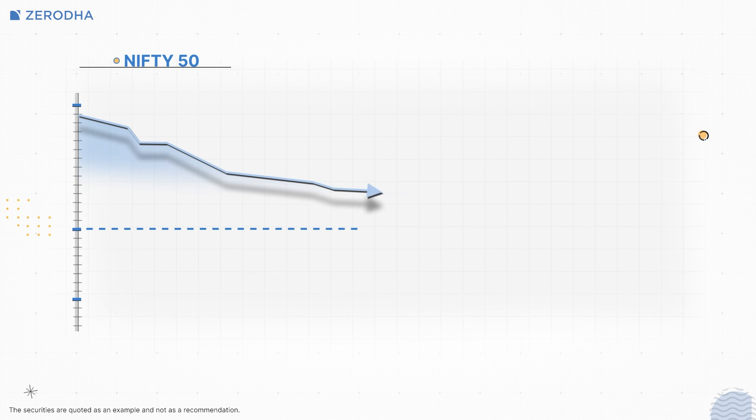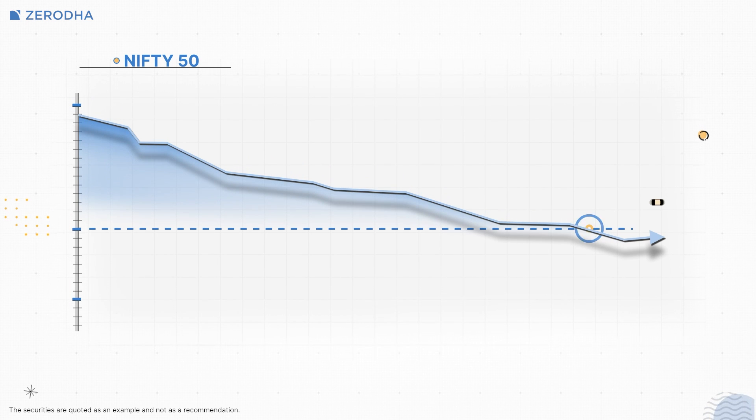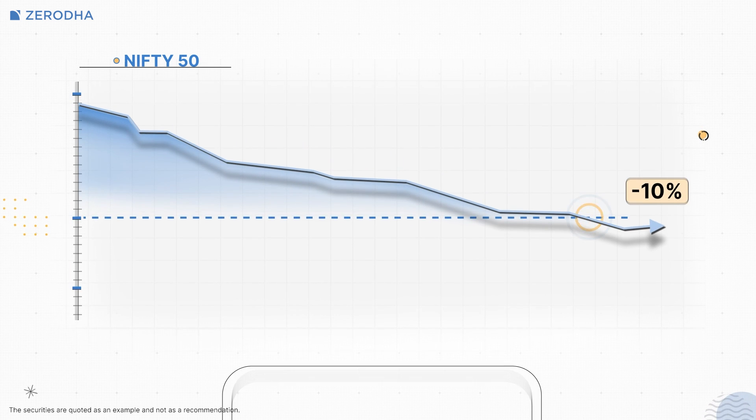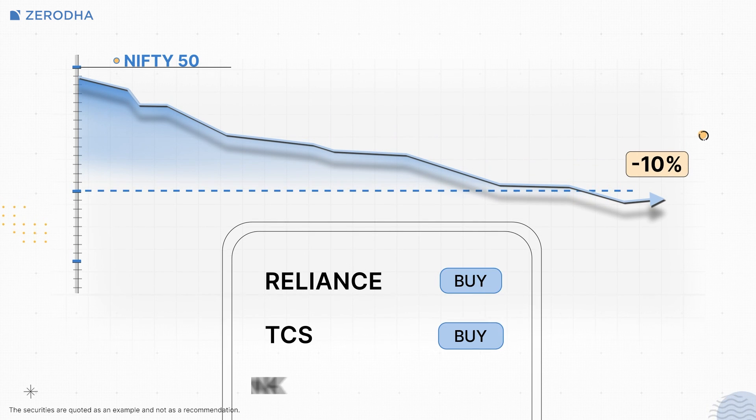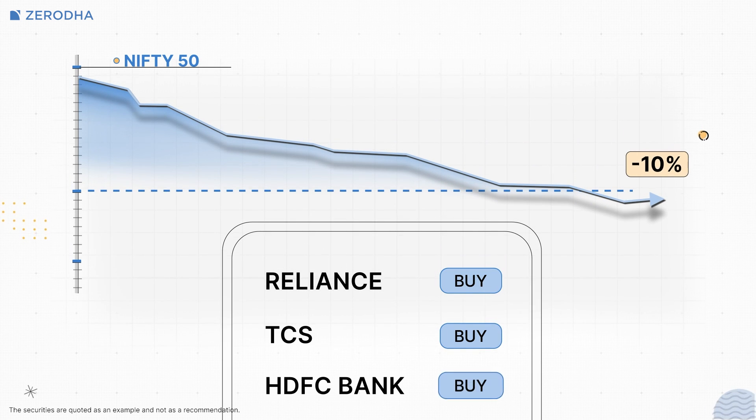Now let's create an ATO as an example with these conditions: if the Nifty 50 index falls by 10%, place buy orders for Reliance, TCS and HDFC Bank. To do that, you can follow these steps.